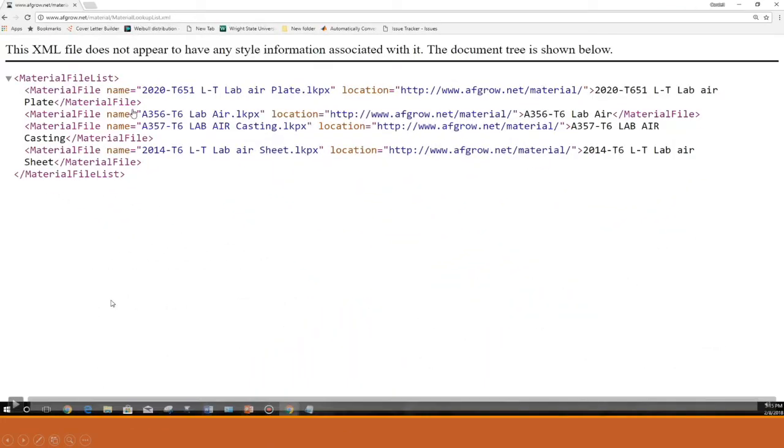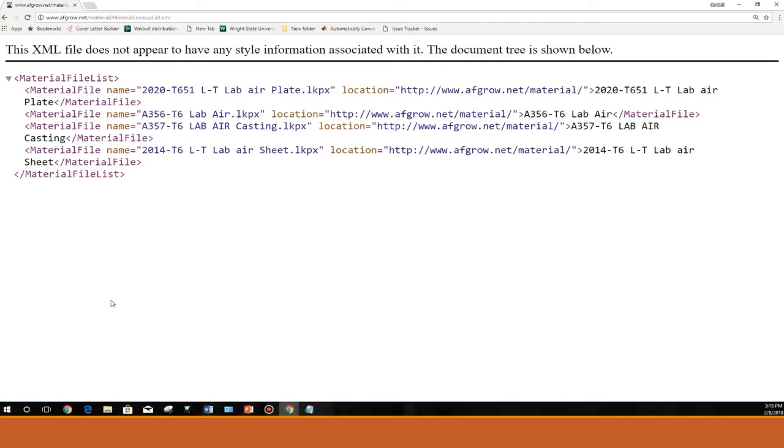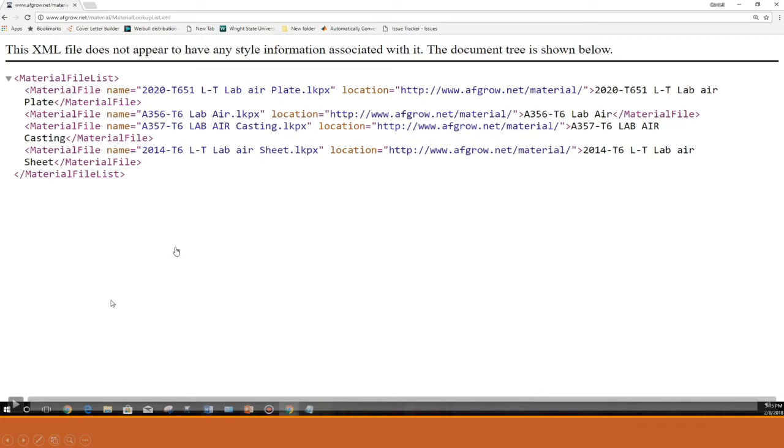Here is an example of a modified configuration file. As you can see in this example the location points to the lookup file that is currently available in the AFGRO database but you can point your configuration file to your local server or your online folder.